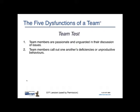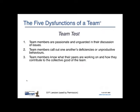Team test two: team members call out one another's deficiencies or unproductive behaviors. This is not common in many companies. Typically, if someone is deficient or unproductive, comments are made behind closed doors or through that individual's superior. The notion that team members would speak directly to the individual and point out those things is not common — but it should be for a successful team.